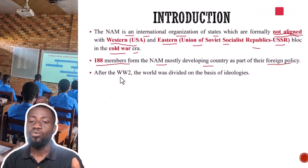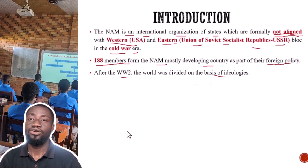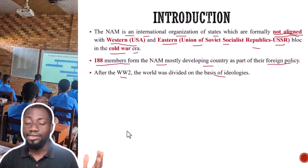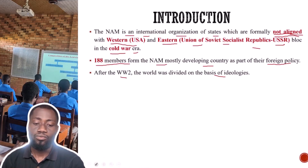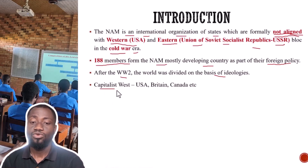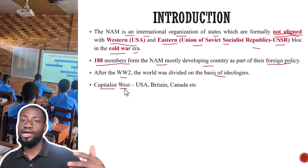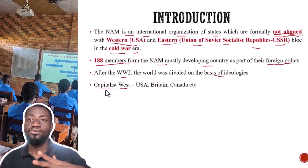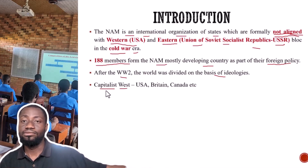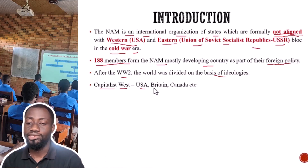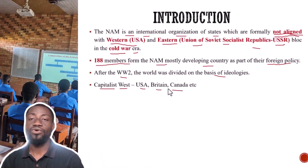Now why did these developing countries decide not to align with any of the superpowers? After the Second World War, around 1945, the world was divided on the basis of ideologies. Two major economic ideologies emerged. The first was a capitalist ideology, supported by the West — Western Europe, mostly the USA, Britain, Canada, Germany. These were the capitalists.